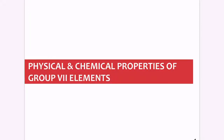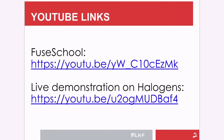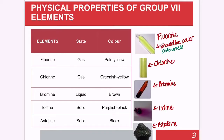Hello everyone. In this video I'm going to discuss the physical and chemical properties of the Group 7 elements. I've created a table for the whole Group 7 elements covering fluorine, chlorine, bromine, iodine, and astatine.